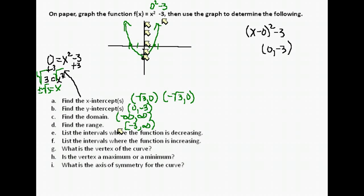For the intervals where the function is decreasing: decreasing means the function is going downward as we move to the right. The downhill slope section of our parabola is going downward as we move to the right. That is happening from negative infinity until we get to 0. When they ask for intervals of decreasing and increasing, remember it's the x values they're asking about.